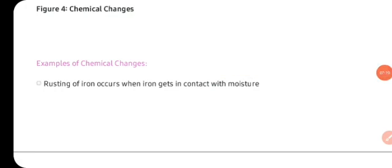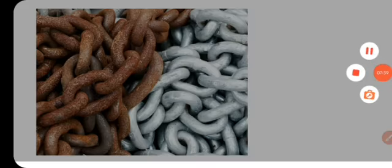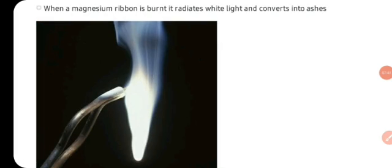Now we will see some examples of chemical change. Sabse pehle aap rusting of iron dekh sakte hai — ek bohot hi common chemical change hai. Ismein iron jo hoti hai woh moisture aur air se contact mein aa kar iron oxide banata hai. Yahan pe aap dekh sakte hai ki yeh iron ki jo chain hai, woh kis tariqe se ismein rusting ho gayi hai. To yeh ek chemical change hai. Agar aap magnesium ko jalaayenge, to magnesium jab jalata hai, to yeh oxygen se react karta hai, aur ismein aapko light aur ashes dekhne ko milta hai — to yeh bhi ek chemical change hai.